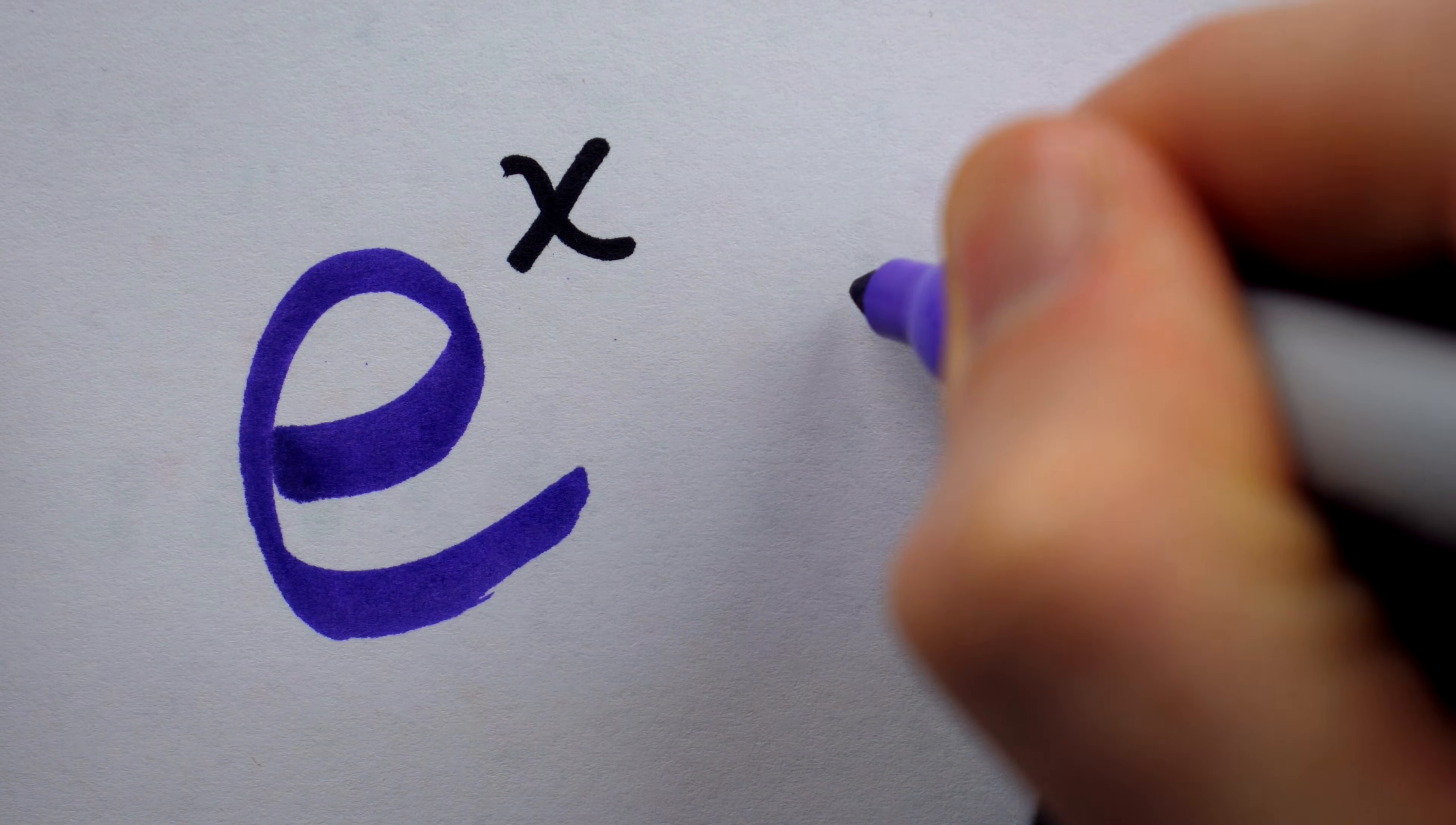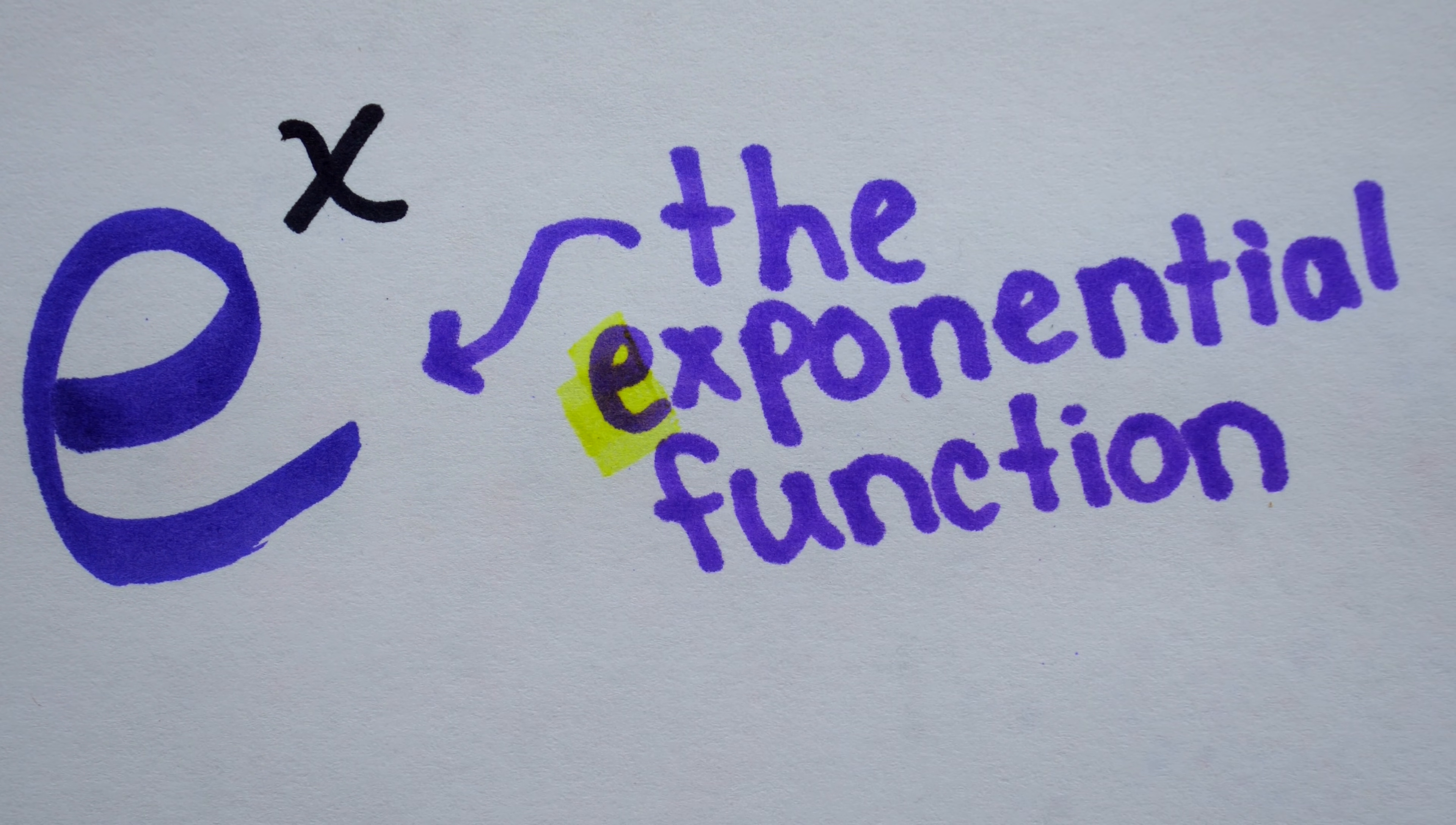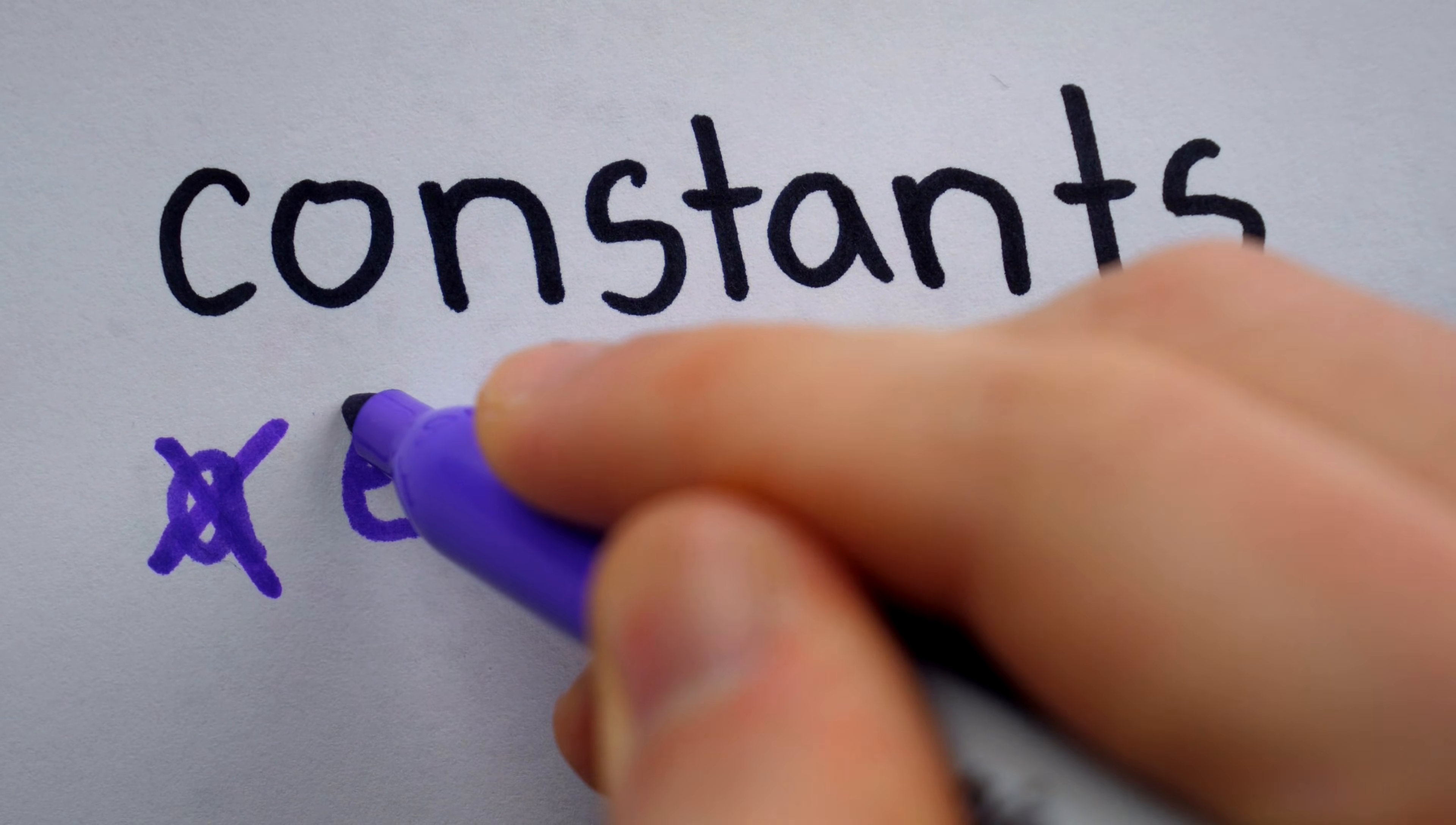In describing natural phenomena, e commonly occurs as the base of what's called the exponential function, e to the x. It's possible Euler chose e since it is the first letter of exponential. Another possibility is that Euler was using vowels for constants, and whenever he decided on e, he was already using a.